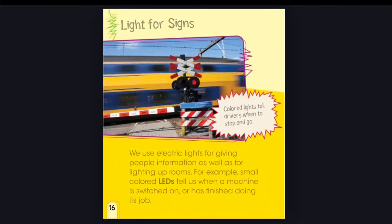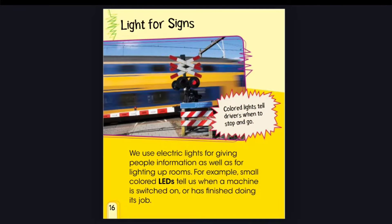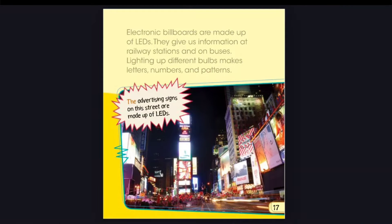Lights for signs. We use electric lights for giving people information as well as for lighting up rooms. Small colored LEDs tell us when a machine is switched on or has finished doing its job. Colored lights tell drivers when to stop and go. Electronic billboards are made up of LEDs — they give us information at railway stations and on buses. Lighting up different bulbs makes letters, numbers, and patterns. The advertising signs on this street are made up of LEDs.